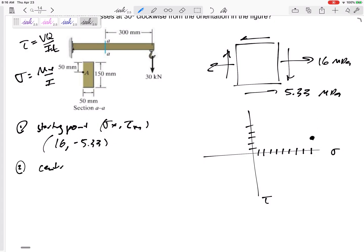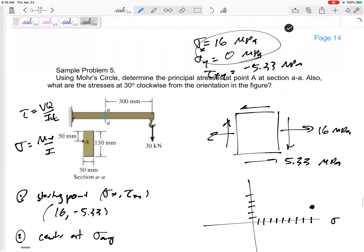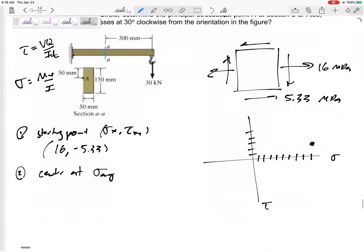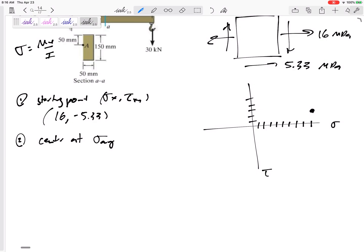Let's draw the center at sigma average. Sigma average would be the average of 16 and zero, so it'd be at 8. I think I drew one too many dots here. Try to make this a good circle. So the average is sigma X plus sigma Y divided by 2, right? 16 plus zero divided by 2, average at 8.